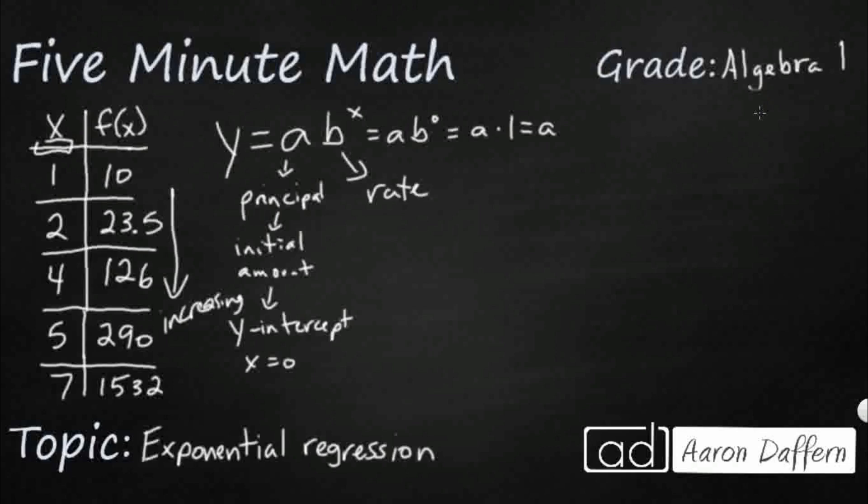This is our rate. This is a growth rate if this b term is greater than 1. This is a decay rate if it is less than 1. And since this is increasing here, the f of x's are increasing, we know that our b is going to be greater than 1.